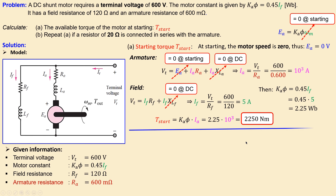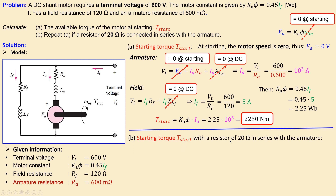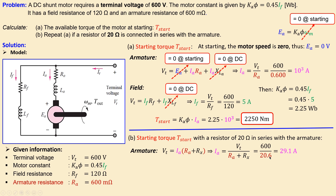Now for question B, we repeat the calculation with a 20 ohm resistor added in series with the armature. This means the effective armature resistance increases to 20.6 ohms. Again the back EMF is zero at start and the inductor reactance is zero. The new armature current is 600 divided by 20.6, which gives approximately 29.1 amperes — a significant decrease from 1000 amperes.